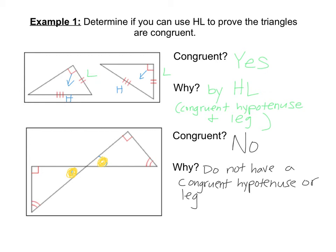We do have three angles, but remember that angle, angle, angle does not work for any triangle. It doesn't matter if it's a right triangle or a different type of triangle. Three angles congruent does not show that the triangles are congruent. It's possible for the three angles to be congruent, but for the triangles to be different sizes.